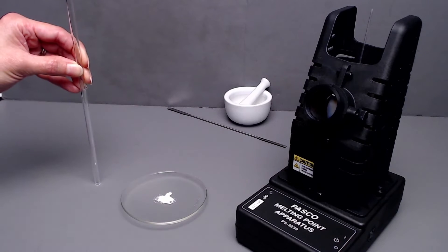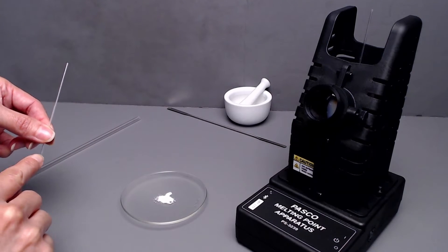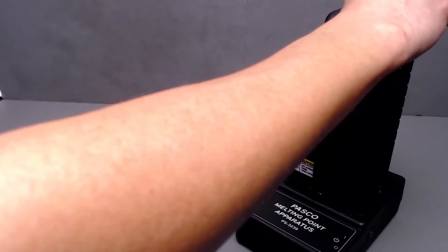Do that a couple of times and then check your height. The sample height should be between two and three millimeters, and then you can set the sample into the melting point apparatus.